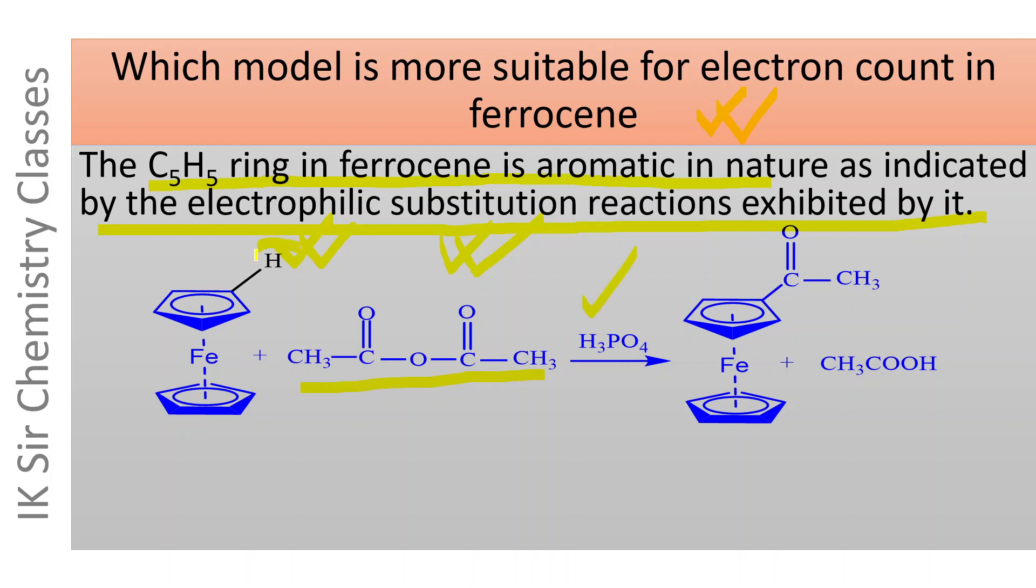When ferrocene is treated with acetic anhydride in phosphoric acid, this hydrogen atom is replaced by acetyl group. This is an electrophilic substitution reaction exhibited by C5H5 ring of ferrocene. It means this ring is aromatic in nature.